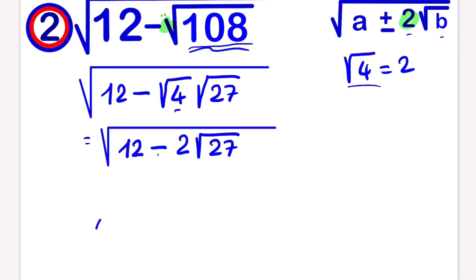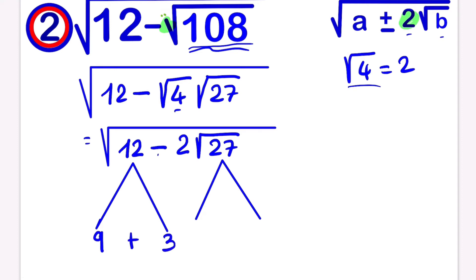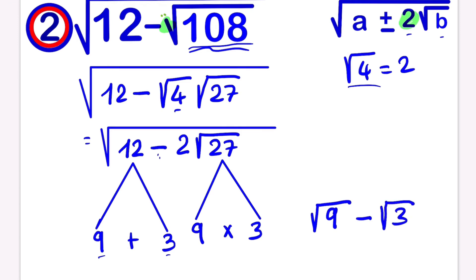Next we have to think of two numbers that when we add them together give us 12, and when we multiply them together give us 27. The two numbers are 9 and 3: 9 plus 3 equals 12, and 9 times 3 equals 27. Since we have minus, which number is greater? 9 is greater than 3, so 9 has to come first. Our answer will be the square root of 9 minus the square root of 3. Simplifying, the square root of 9 is 3, so our answer is 3 minus root 3.